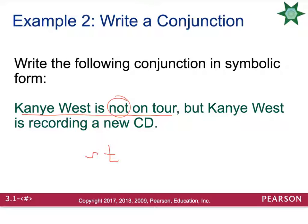The comma signals that the second part of the statement is coming, and the word 'but' indicates 'and' — we use the conjunction symbol ∧. Then 'Kanye West is recording a new CD' we call R. There's no negation on recording, so the full symbolic form is ~T ∧ R.